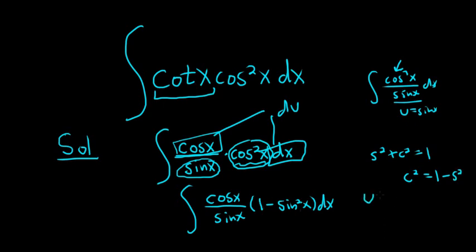So now if we let u be sine x, then du is cosine x dx. And things work out nicely, right? Because what happens is we have cosine x dx.